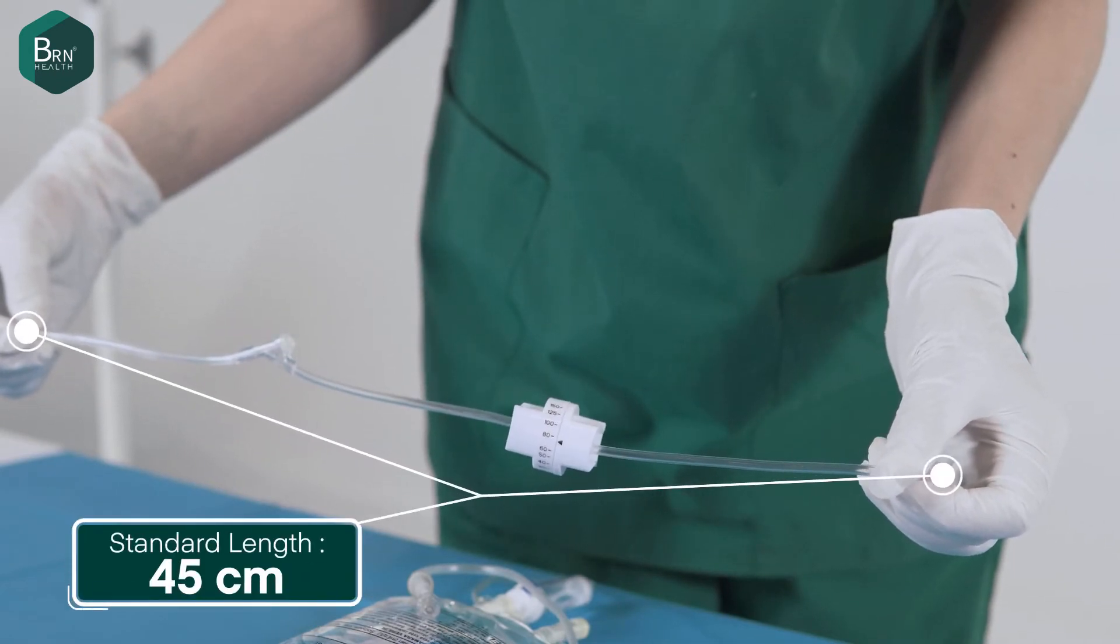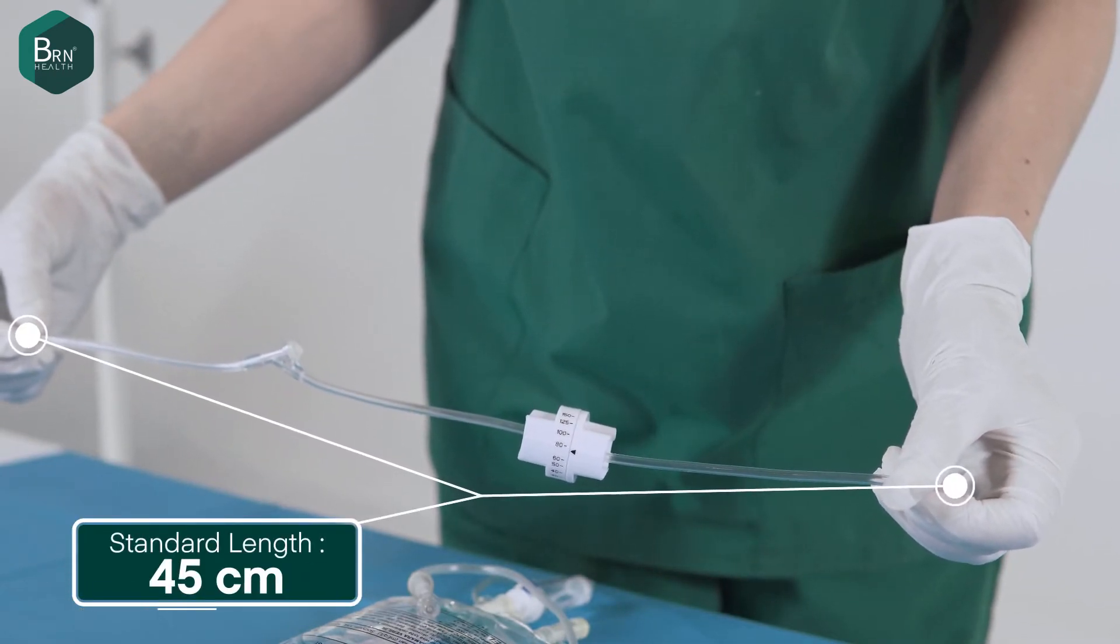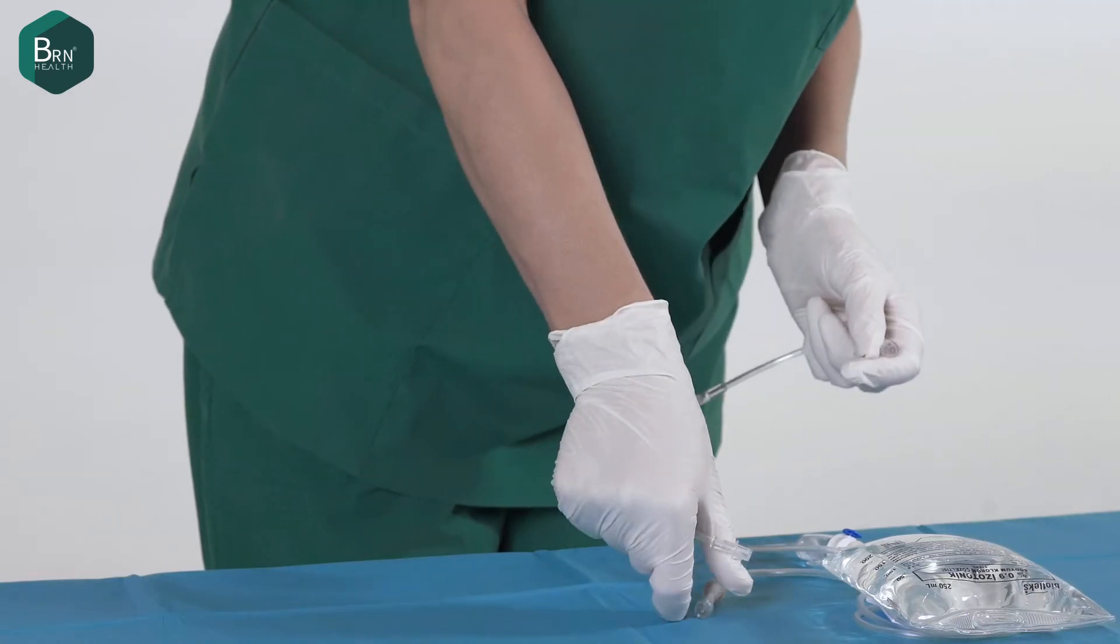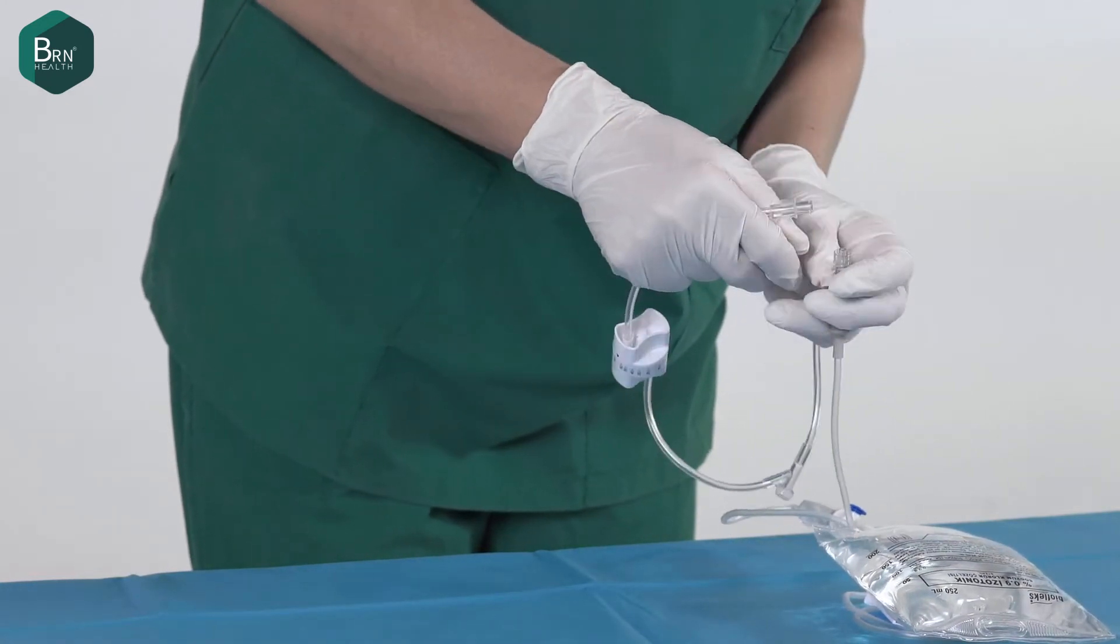Turning the adjusting knob clockwise decreases the flow rate, whereas turning it counterclockwise increases the flow rate.